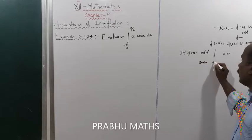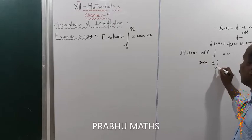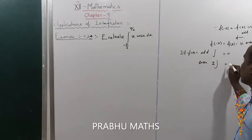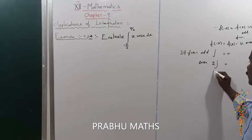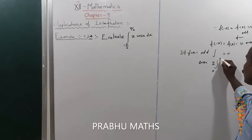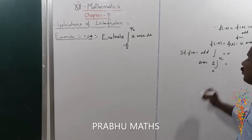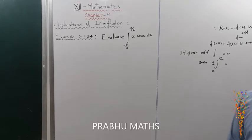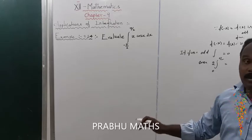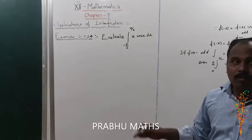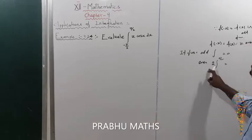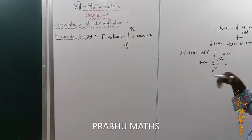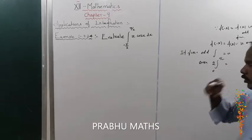If the function is even, the result is 2 times the integral from 0 to a. For example, if the given limit is minus pi/2 to plus pi/2, we get 2 times the integral from 0 to pi/2.